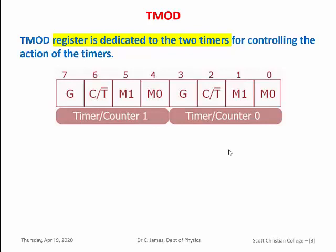In order to control the two timers or counters, 8051 has a single register called TMOD. To control the timers or counters, suitable bits have to be stored in TMOD.